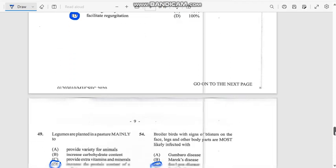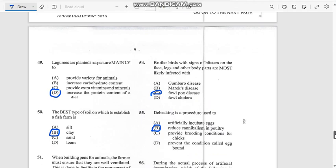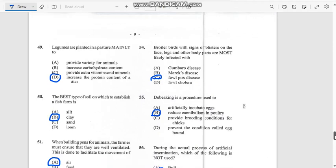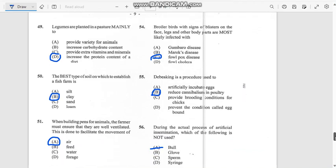Number 48: What are the chances of hornless offspring being produced? The answer is 25 percent. Number 49: Legumes are planted in pasture mainly to increase the protein content of the diet.